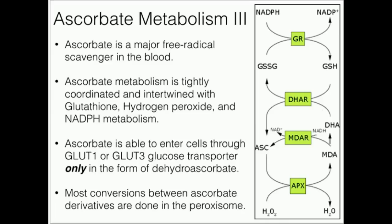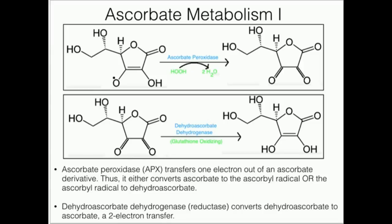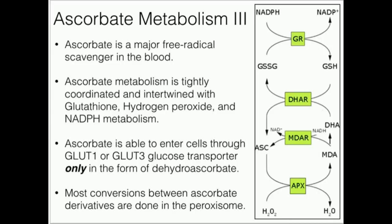Ascorbate only enters cells in the form of dehydroascorbate. Once dehydroascorbate is in the cell, dehydroascorbate reductase can reconvert it to the totally reduced ascorbic acid form. Dehydroascorbate enters the cell through GLUT1 and GLUT3 transporters — glucose transporters that have a slightly broader specificity and can transport dehydroascorbate into the cell. One other really important thing in humans and most mammals is that a lot of these conversions occur in the peroxisome. The peroxisome is the major site of hydrogen peroxide catabolism, and since it has a lot of catalase as well as hydrogen peroxide, it's a logical place to carry out ascorbate metabolism and transformations.